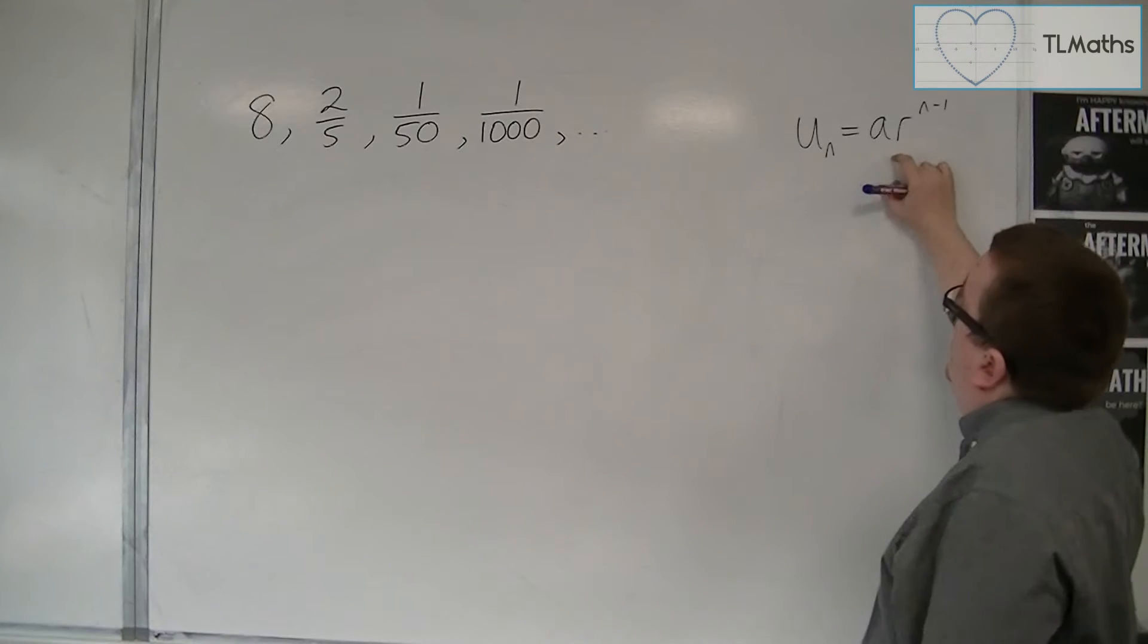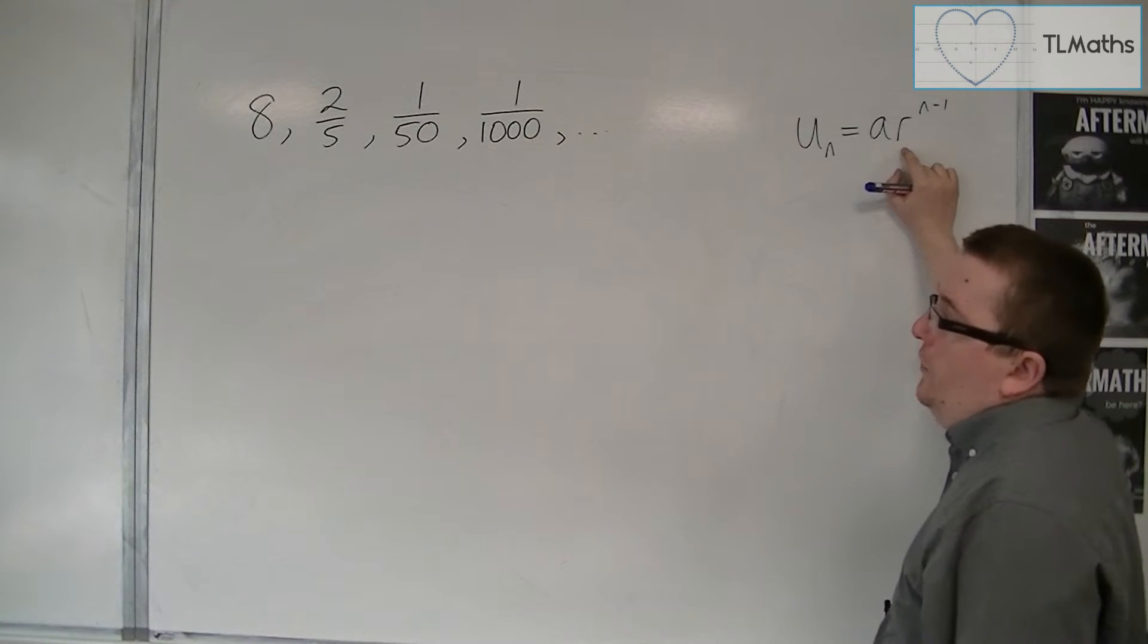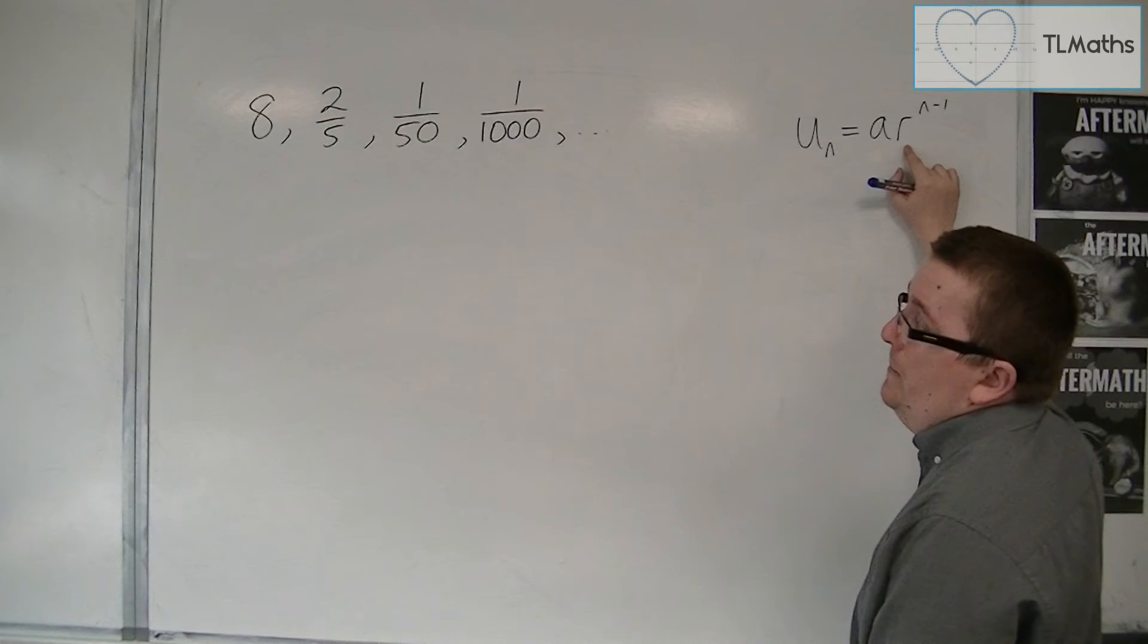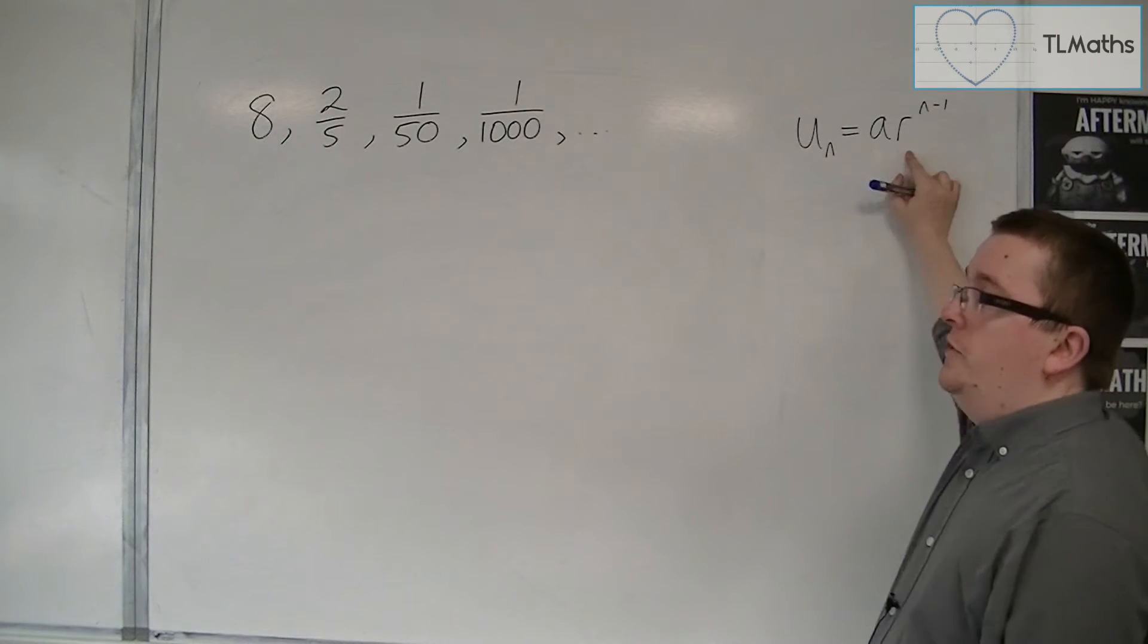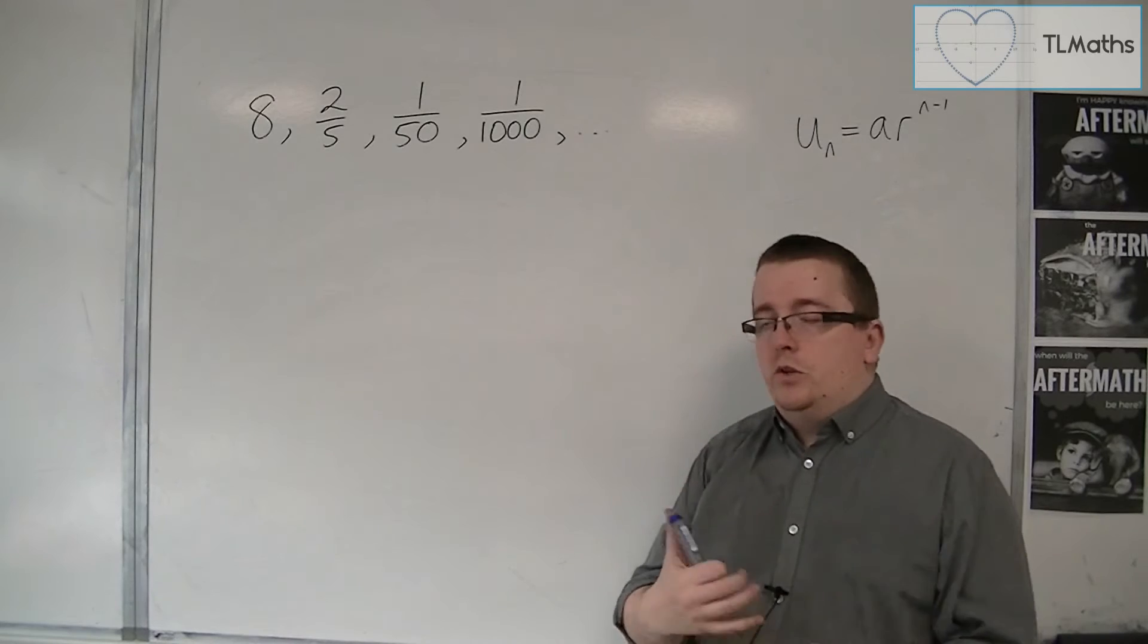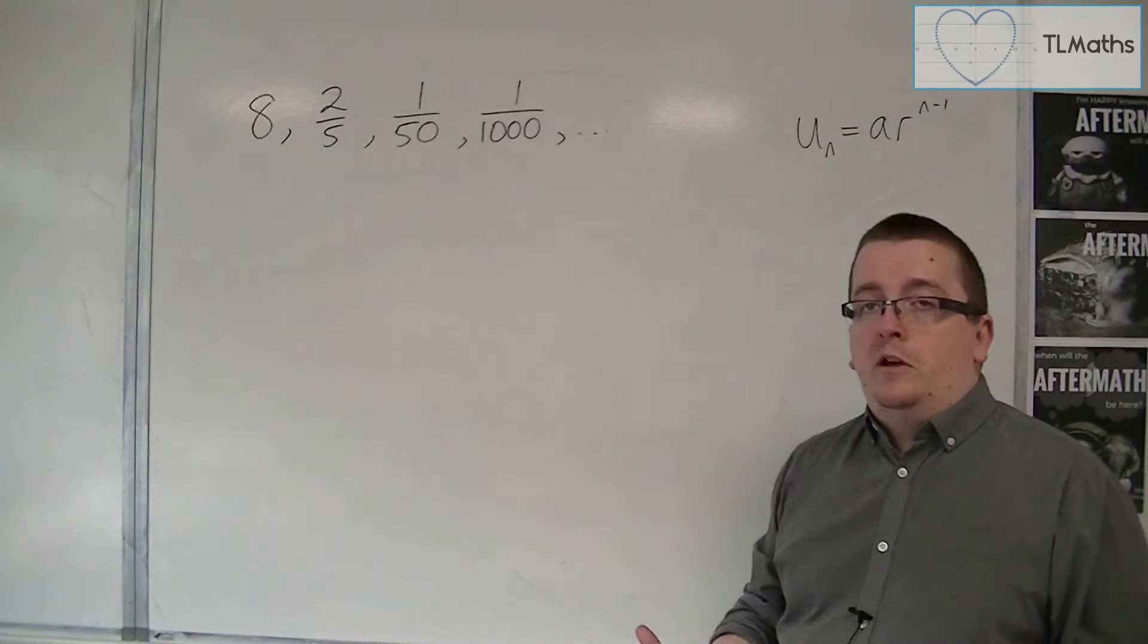But what can be more tricky is finding the common ratio R. Sometimes it's blindingly obvious, but in other cases, maybe like this one, you can't see it initially. You can't spot what I'm multiplying by each time.